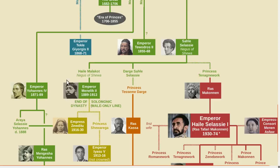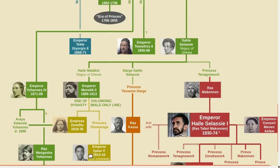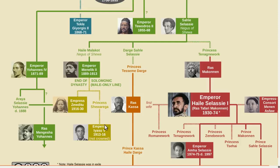Menelik II is the last confirmed male-line ancestor of the Solomonic dynasty. Early in his reign, the Italians attacked Ethiopia, but the Ethiopians were able to successfully defend themselves. Because Menelik II had only daughters, the throne passed to his grandson, Iyasu V. However, Iyasu was never crowned. His father had been Muslim, and there were concerns that Iyasu might eventually come to support Islam.